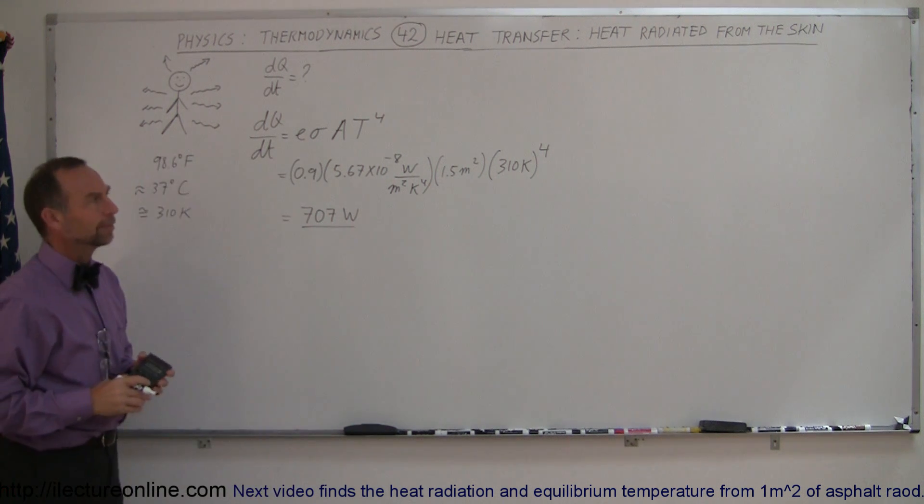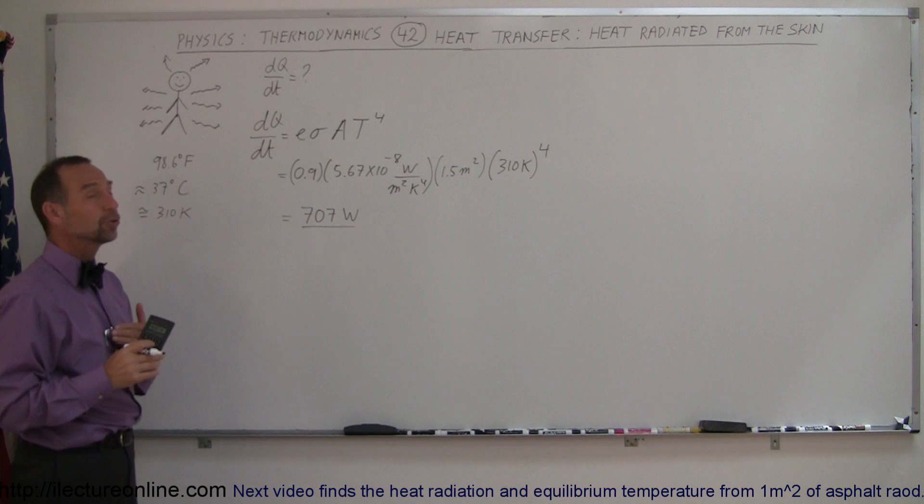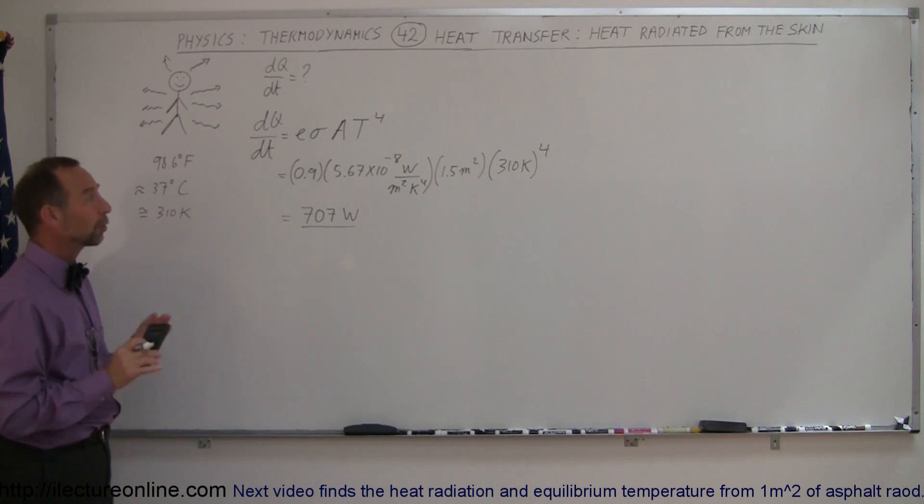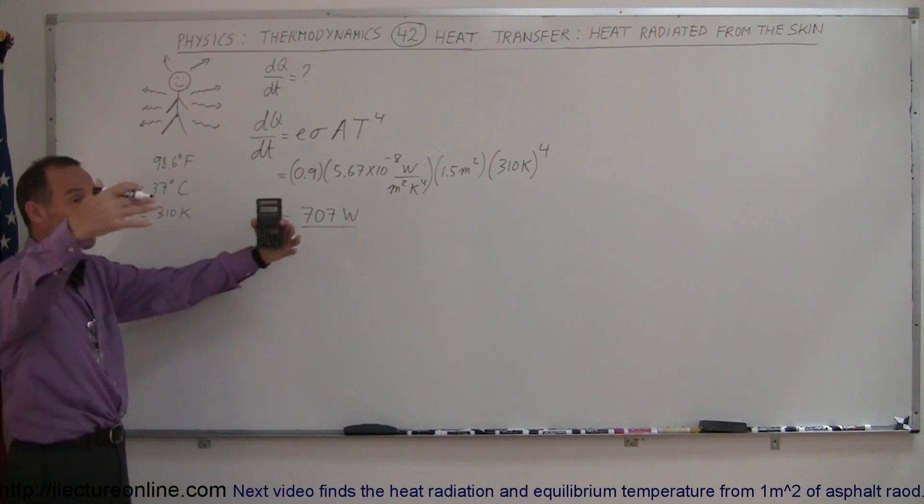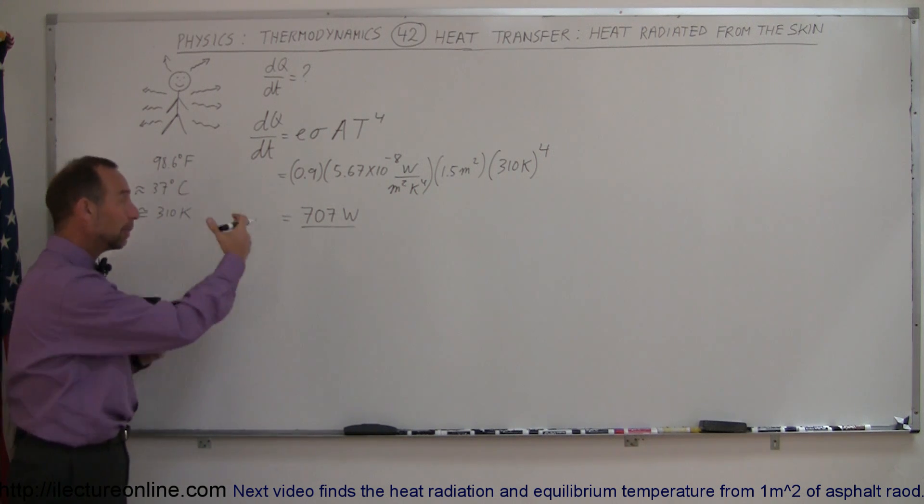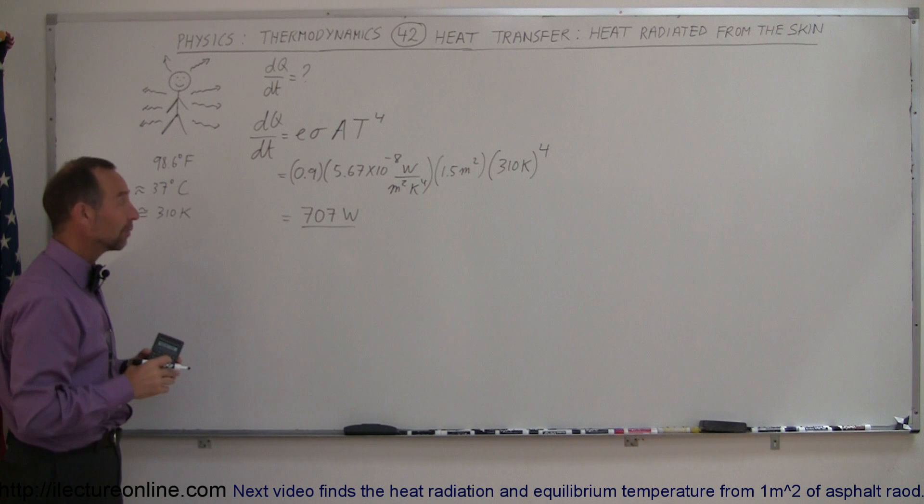Well, that's actually quite a bit. Now, what we're doing here is we're ignoring something. We're simplifying, oversimplifying things. If the body was placed in deep space where there's no radiation reaching the body, the body would indeed radiate out 707 watts.